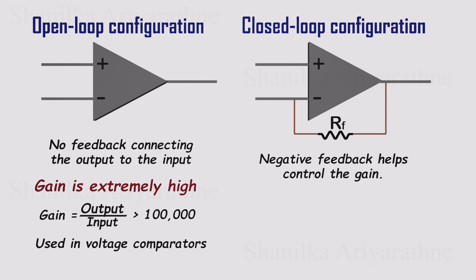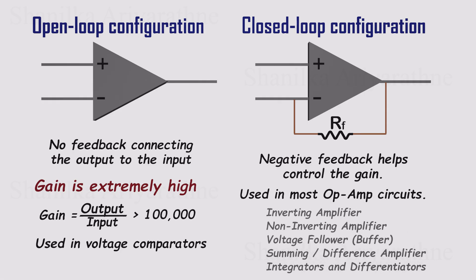Most of the time, though, we use op-amps in closed-loop mode with negative feedback. That means part of the output is fed back to one of the inputs, usually through a resistor network. Negative feedback tames that huge gain, keeps the circuit stable, and makes the op-amp behave in a predictable, linear way. Closed op-amp circuits are everywhere, from inverting and non-inverting amplifiers, to summing amps, difference amps, integrators, and differentiators.